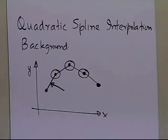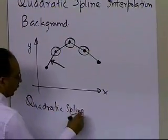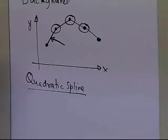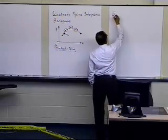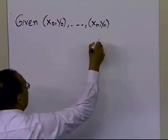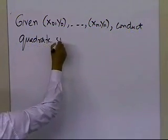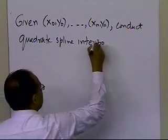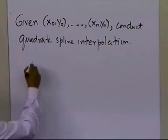The answer to this question might be to use quadratic spline interpolation, because it's quite possible that we can use information from other data points, and we won't get the problem of the slope suddenly changing from the left to the right of the point. So the problem statement is: given x0, y0, all the way up to x of n, y of n, conduct quadratic spline interpolation — develop quadratic splines through the data.